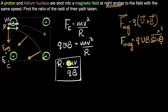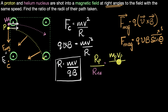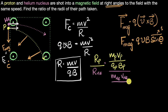Now I need to find the radius for the proton divided by the radius for the helium nucleus. That will be: mass of the proton times speed of the proton divided by charge of the proton times the magnetic field, all divided by mass of the helium nucleus times velocity of the helium nucleus divided by charge of the helium nucleus times the magnetic field.